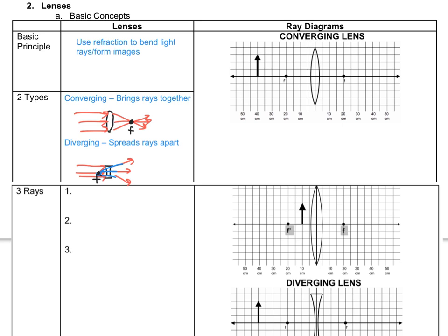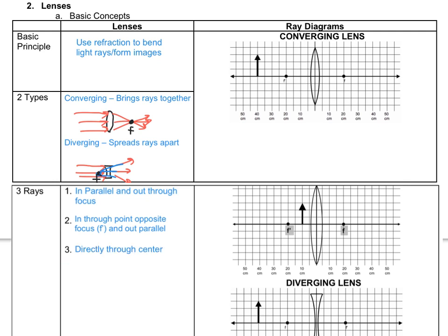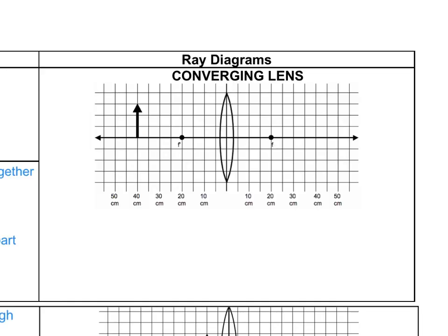There are three rays we use to determine where an image forms through a lens. The parallel ray goes in parallel and out through the focus. The focal ray goes in through F prime — the point opposite the focus — and out parallel. The central ray goes directly through the center of the lens. Using these for our first ray diagram with a converging lens: the first ray goes in parallel and out through the focal point; the second goes in through F prime and out parallel; the third goes through the center. Where those rays converge, we draw our image.